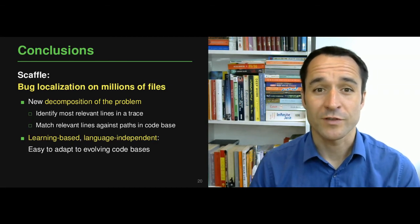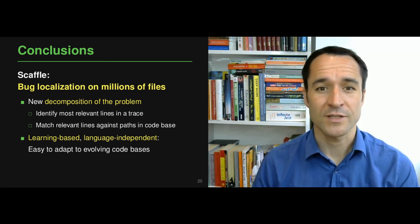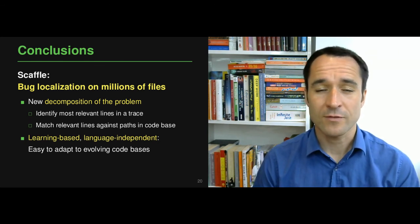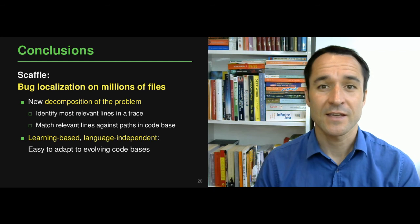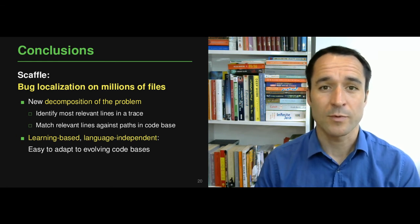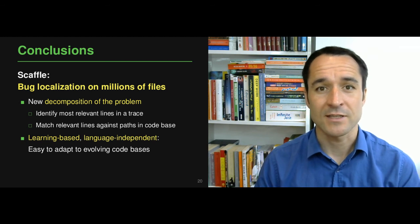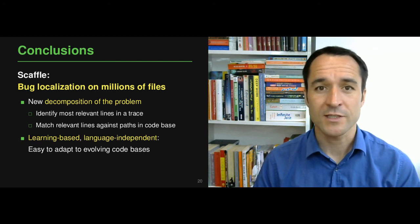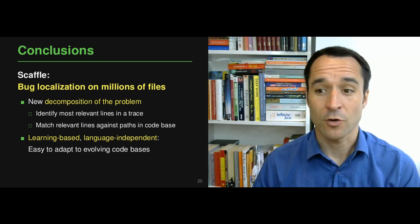In conclusion, I've presented Scaffle, our new approach for bug localization on millions of files. One of the key ideas is decomposing the problem into two easier subproblems: first identifying the most relevant lines in a given crash trace, and second matching these relevant lines against paths in the codebase. Scaffle is learning-based and language-independent, which means it's easy to apply to other codebases or adapt to an evolving one — if a new programming language becomes more popular or crash trace formats change, you only need to retrain the model. Thank you very much for your attention.